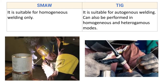Next difference: SMAW is suitable for homogeneous welding only. There are three types of welding: autogenous, where no filler is supplied; homogeneous, where the filler composition is almost similar to the parent metal; and heterogeneous, where the filler composition is substantially different from the base metal. SMAW is suitable for homogeneous welding only.